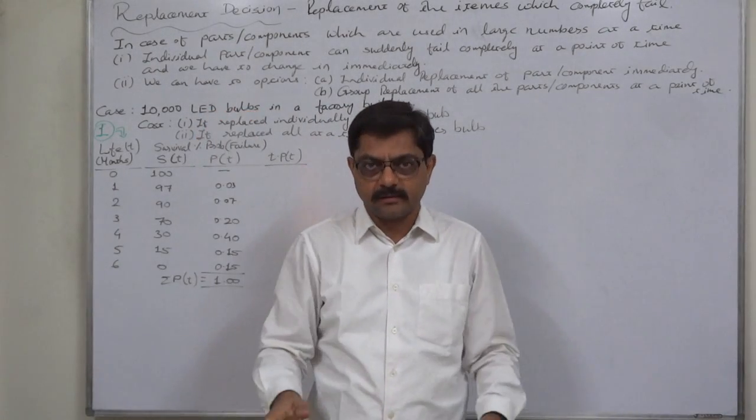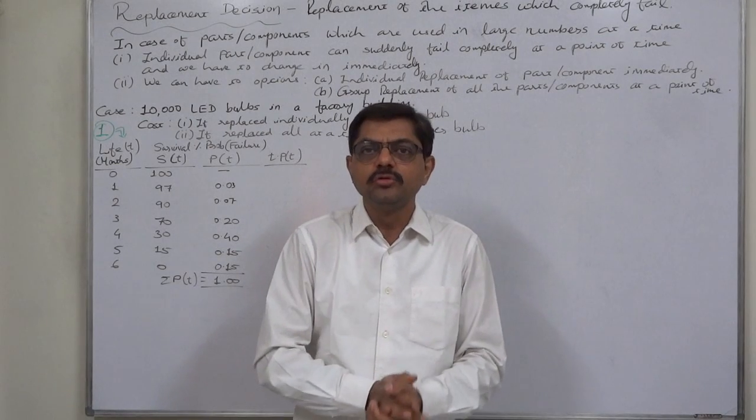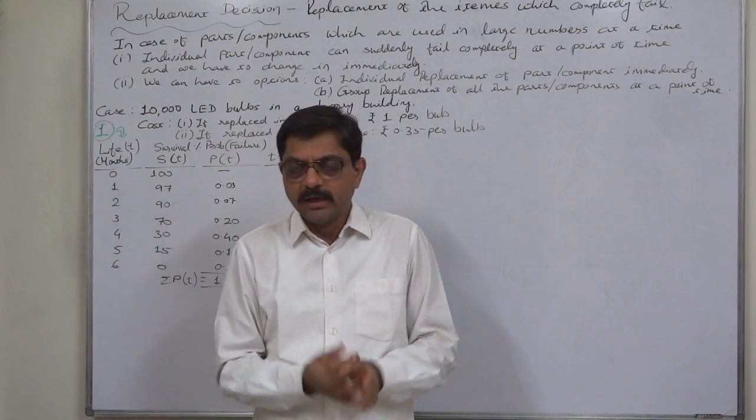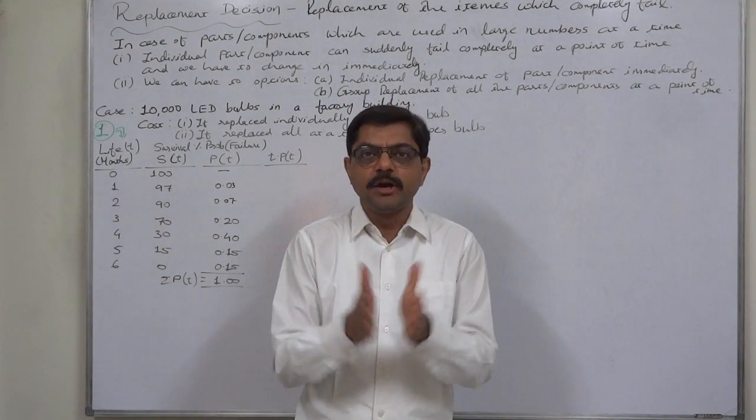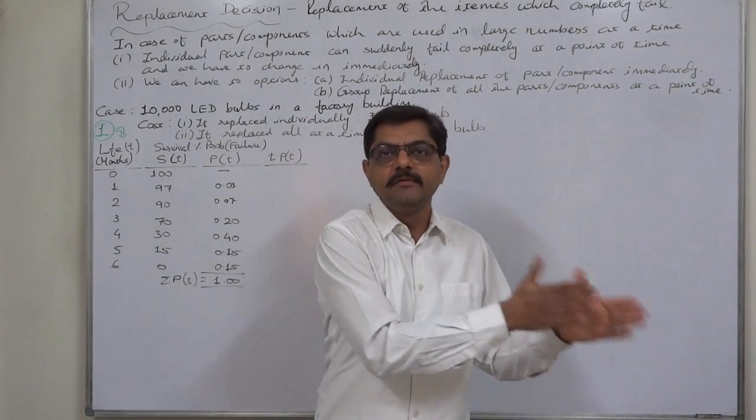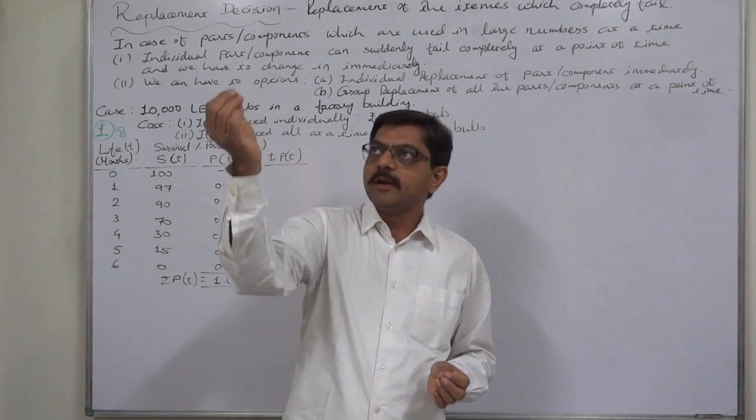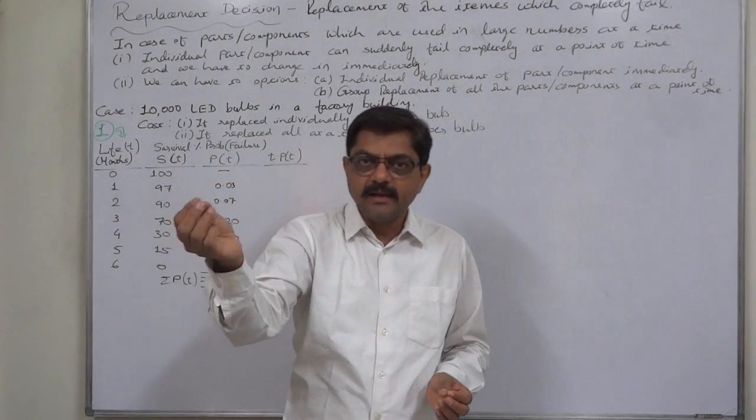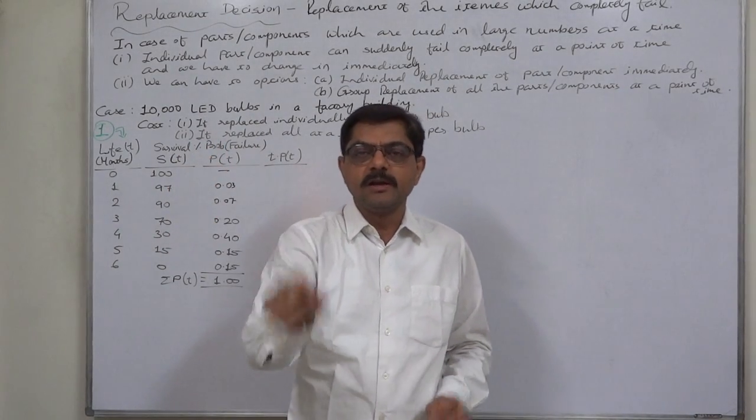In six months, we are expecting that all 10,000 at different points of time will fail to work and we will have to replace all of them. The question is till which point we should continue with individual replacement, because only one bulb at any point of time of a day fails to work.